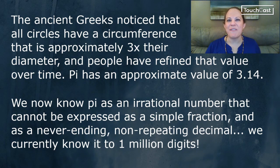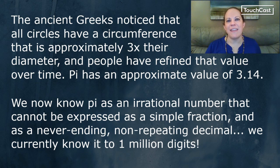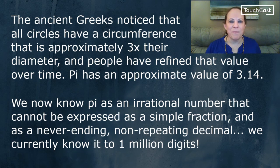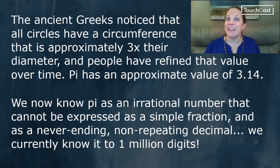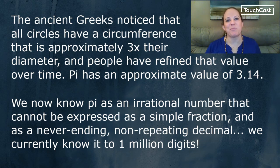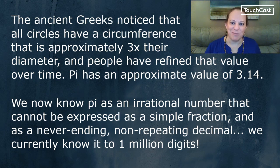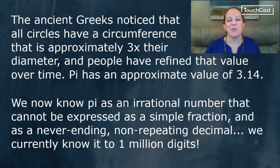The ancient Greeks noticed that all circles have a circumference that's approximately three times its diameter, and people have refined that value over time. Pi has an approximate value of 3.14. You can often find a pi button on scientific and graphing calculators, and if I don't have that, I use a slightly more precise value of 3.14159. We now know that pi is an irrational number that cannot be expressed as a simple fraction, and it's a never-ending, non-repeating decimal, and we currently know pi to about a million digits.